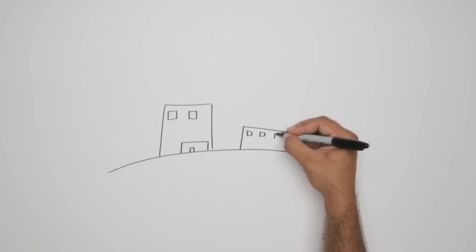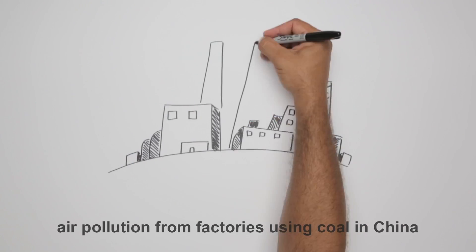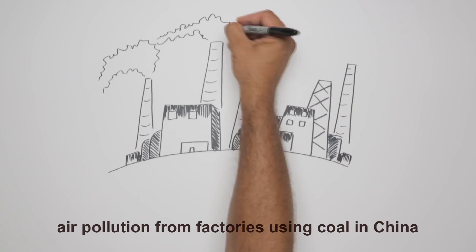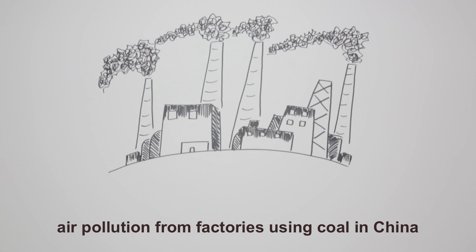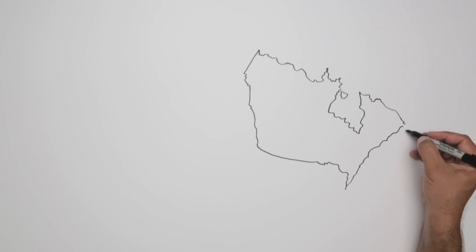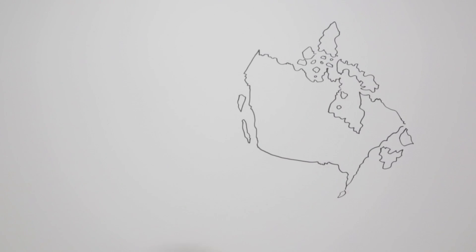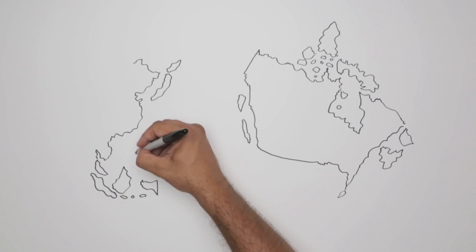Air pollution in China alone contributes significantly to the premature death of more than 1.2 million people each year. And some of that pollution from Asia is known to travel across the Pacific Ocean, affecting our environment here in British Columbia.